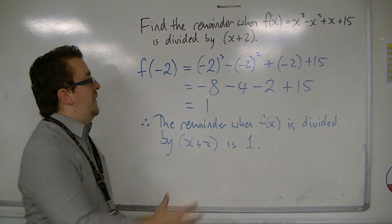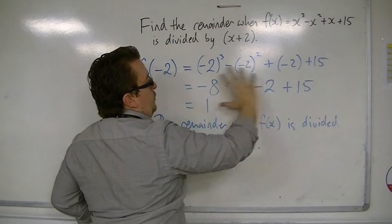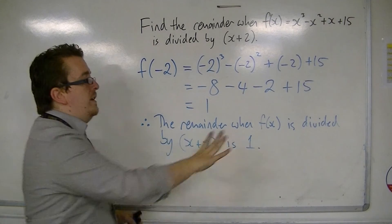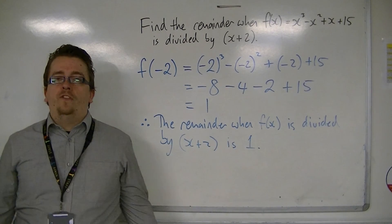Okay, and that is how this 2 mark question is formulated. So you plug the value in, you get an answer, get a solution, and then you have a concluding statement, much like it was for the factor theorem.